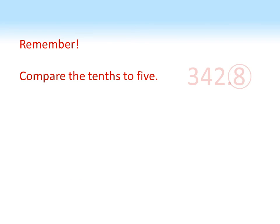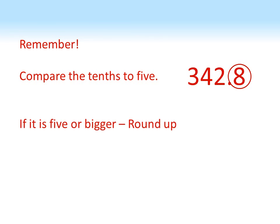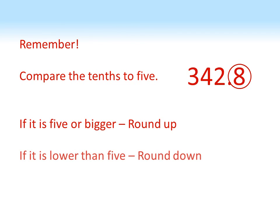So remember, we're going to compare the tenths digit to 5. If it's 5 or bigger — such as in this number — we round up, so 342.8 would round to 343. If the tenths digit is lower than 5, we round down.